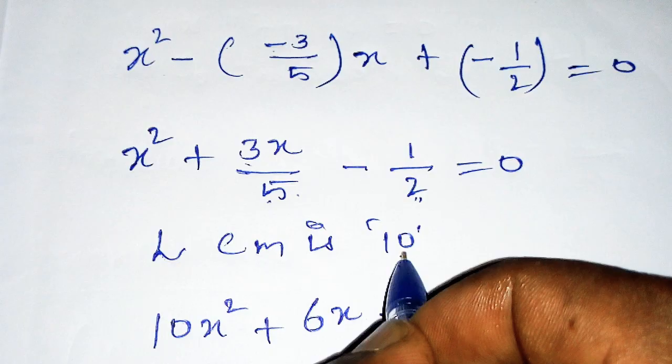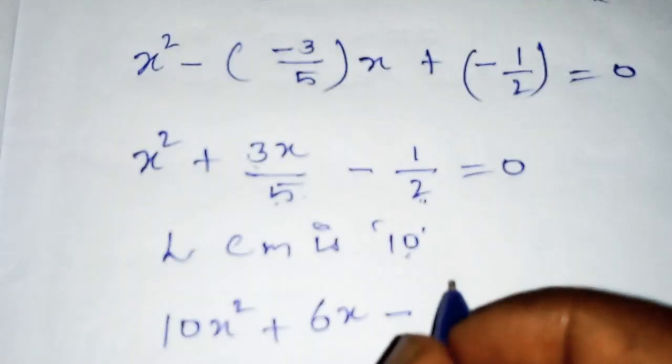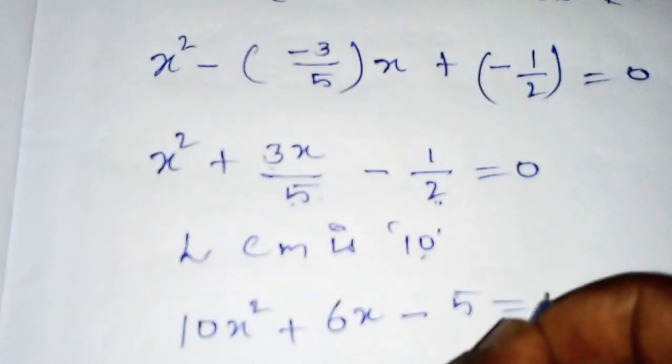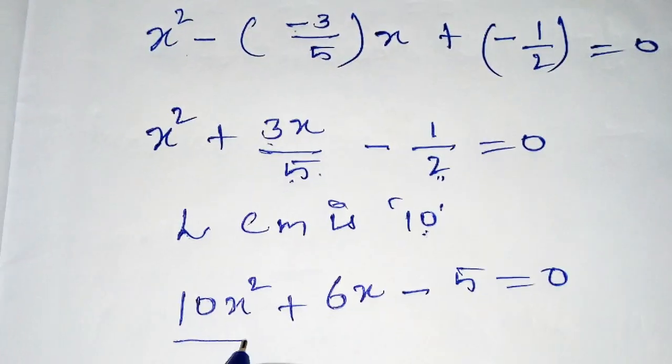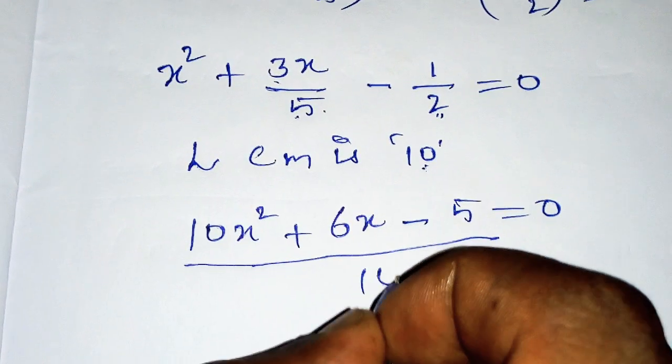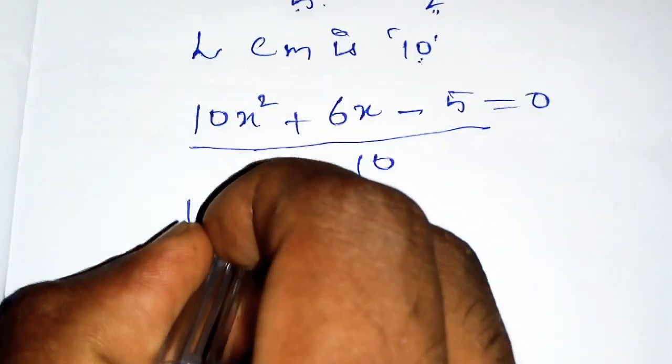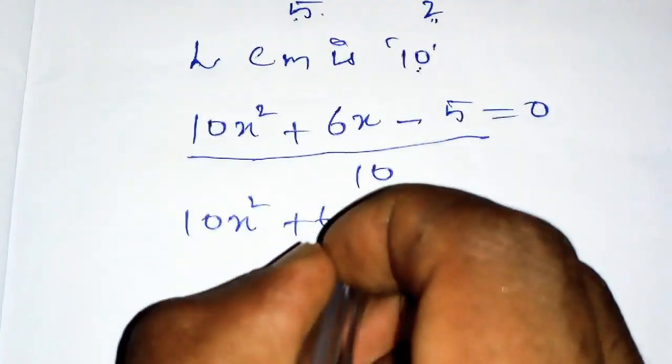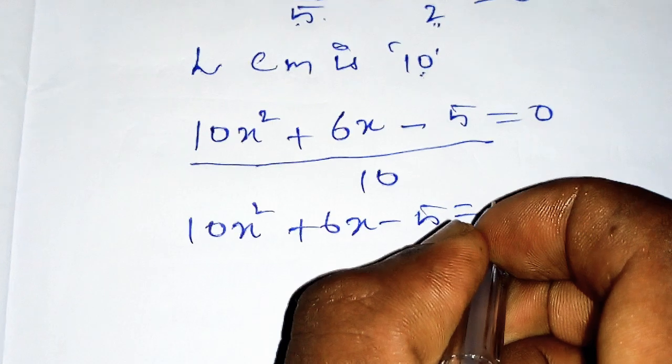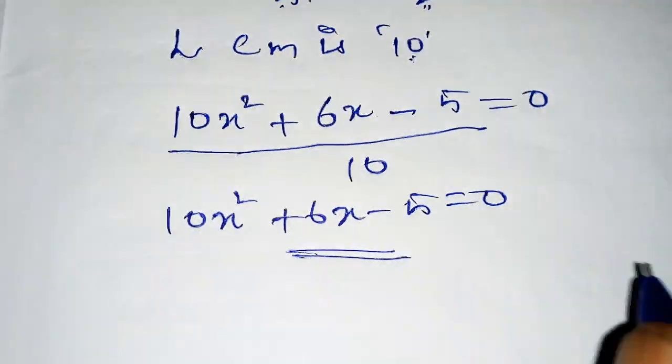Continuing the multiplication... equals zero, divided by 10. The final answer is 10x² + 6x - 5 = 0. This is the general form of the quadratic equation.